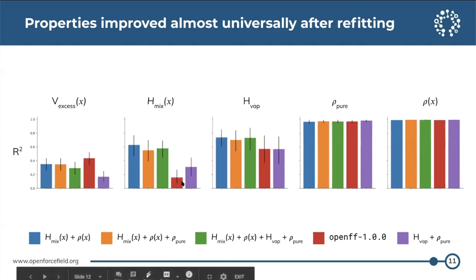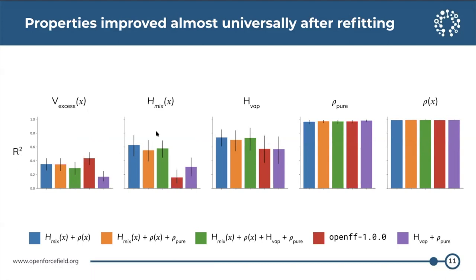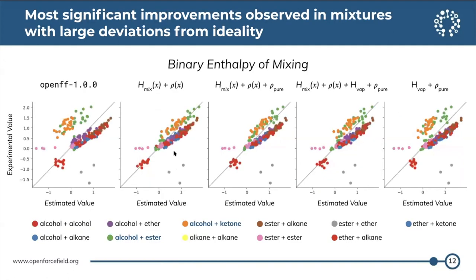One can also look at the R-squared — the same kind of plot but with R-squared on the y-axis. The main takeaway is that when we benchmark enthalpy of mixing against the force field optimized against the mixed properties, we did see a significant improvement in the correlation of these properties.